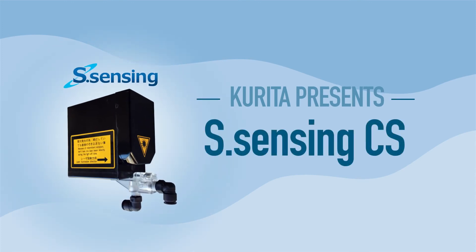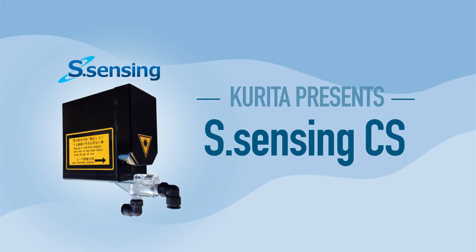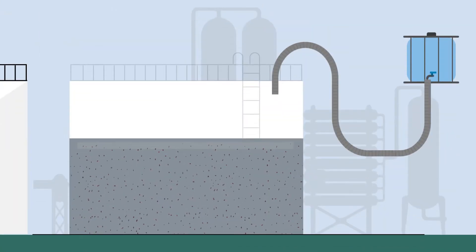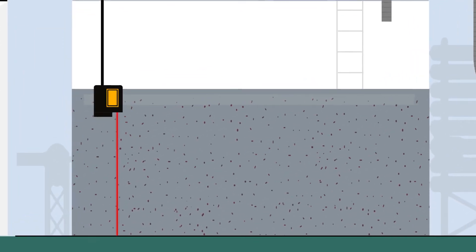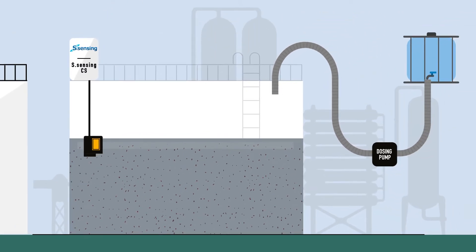Kurita's S-Sensing CS technology offers an innovative equipment to control the product dosage in several industrial wastewater treatment systems. This state-of-the-art application is using a laser-based technology and offers an in-situ measurement of the turbidity between the flocks.